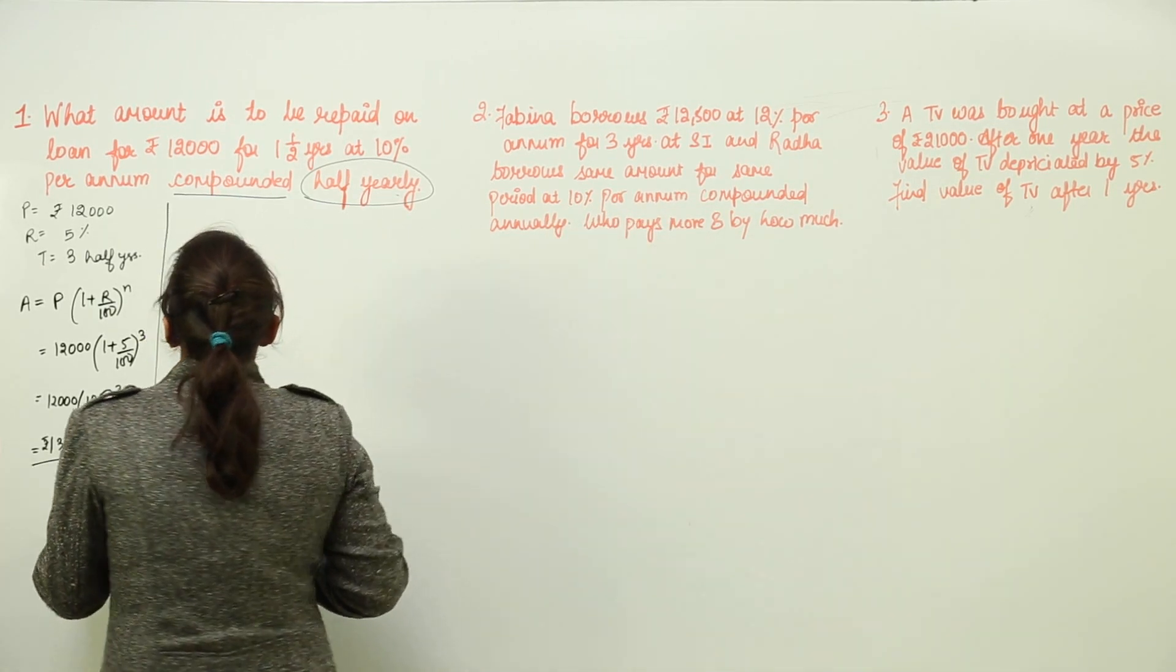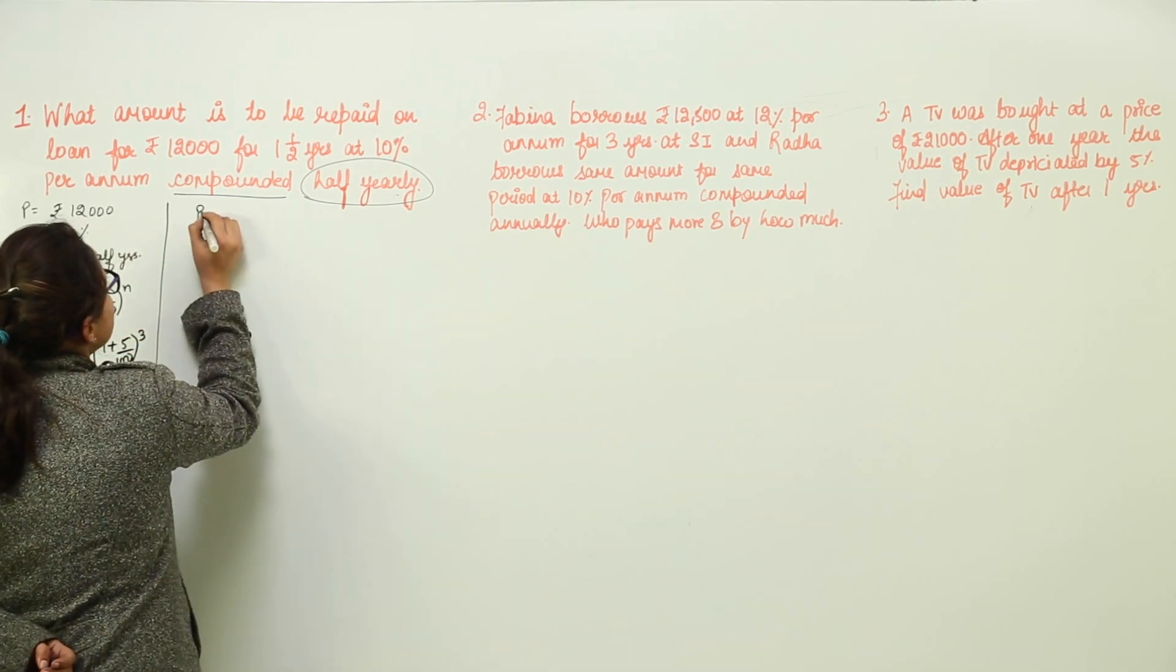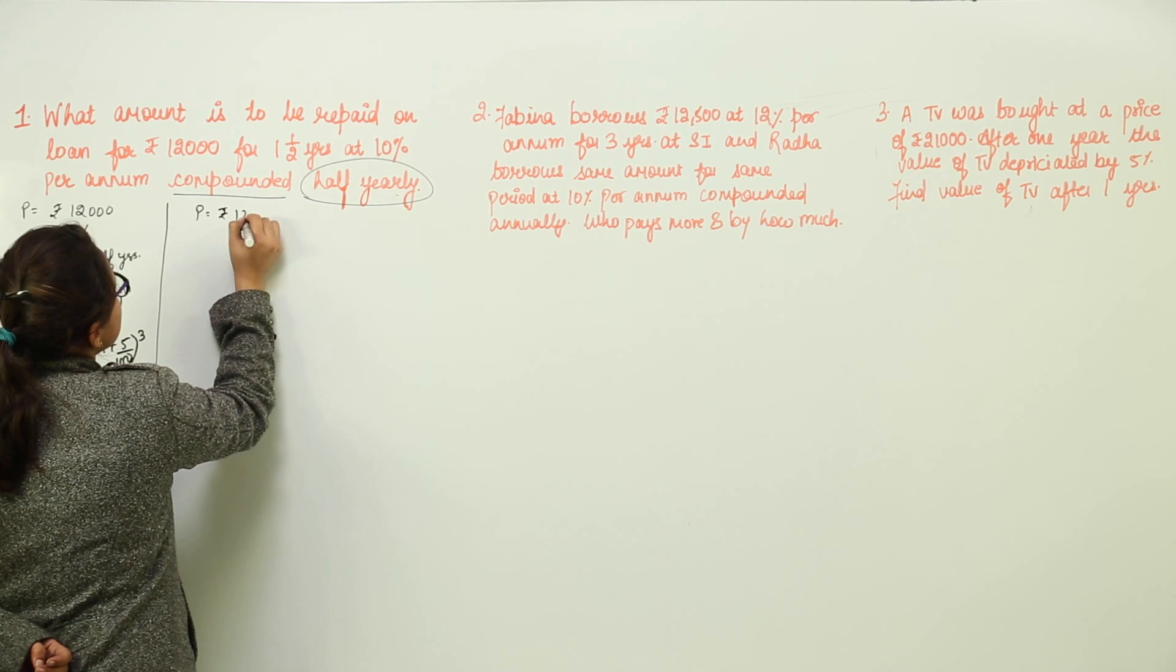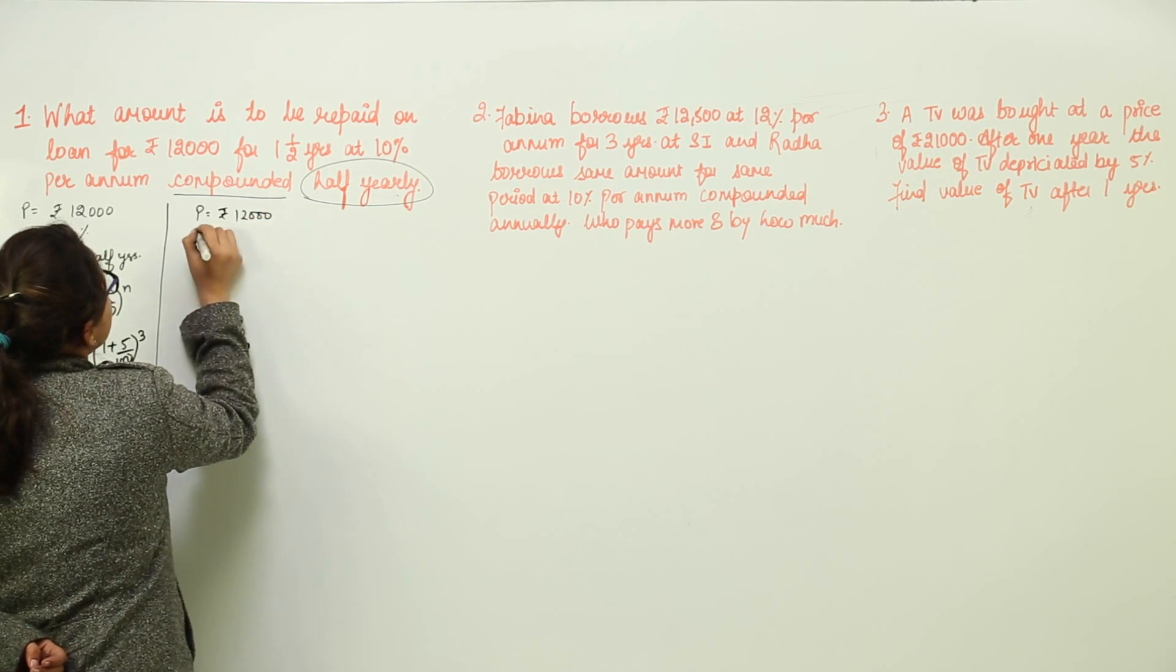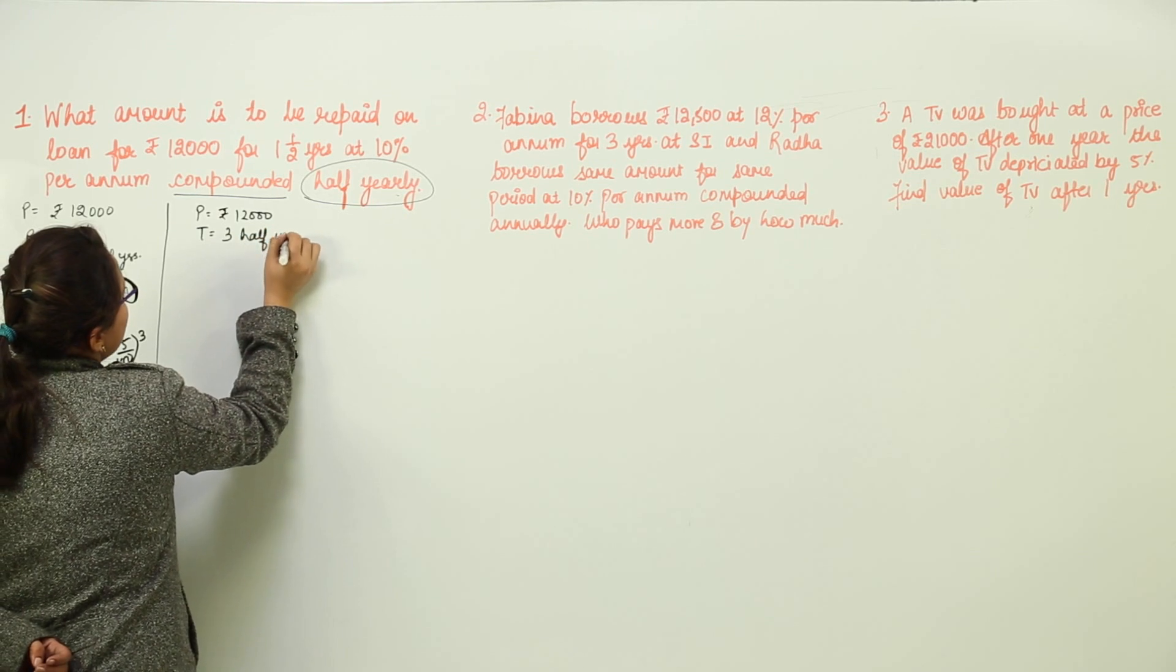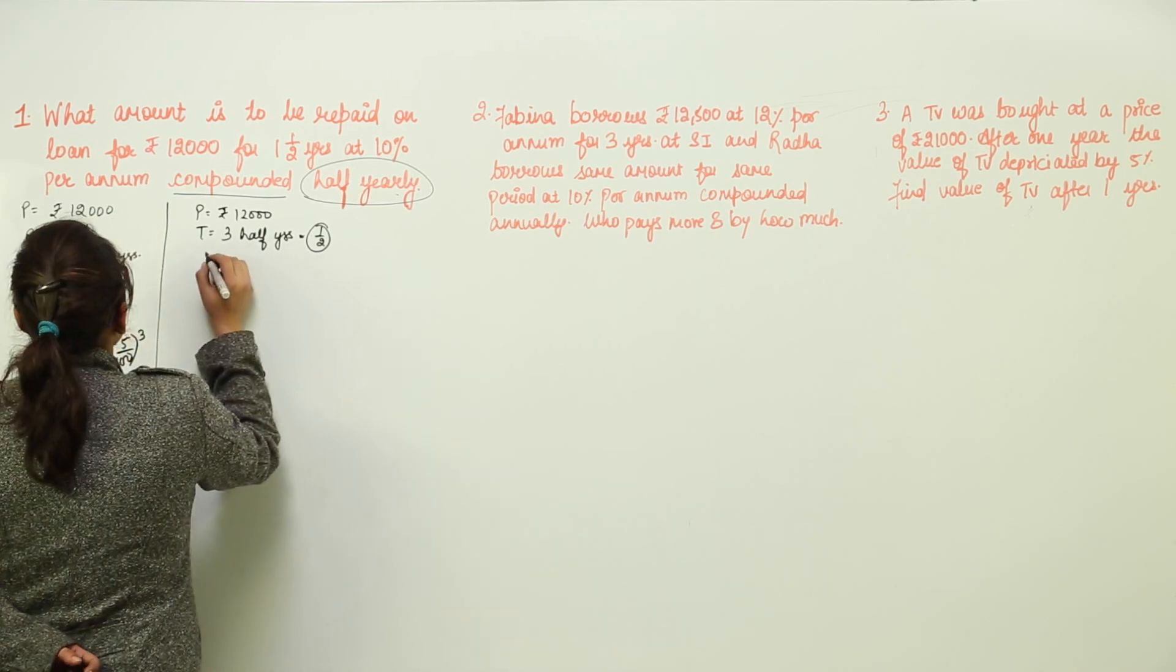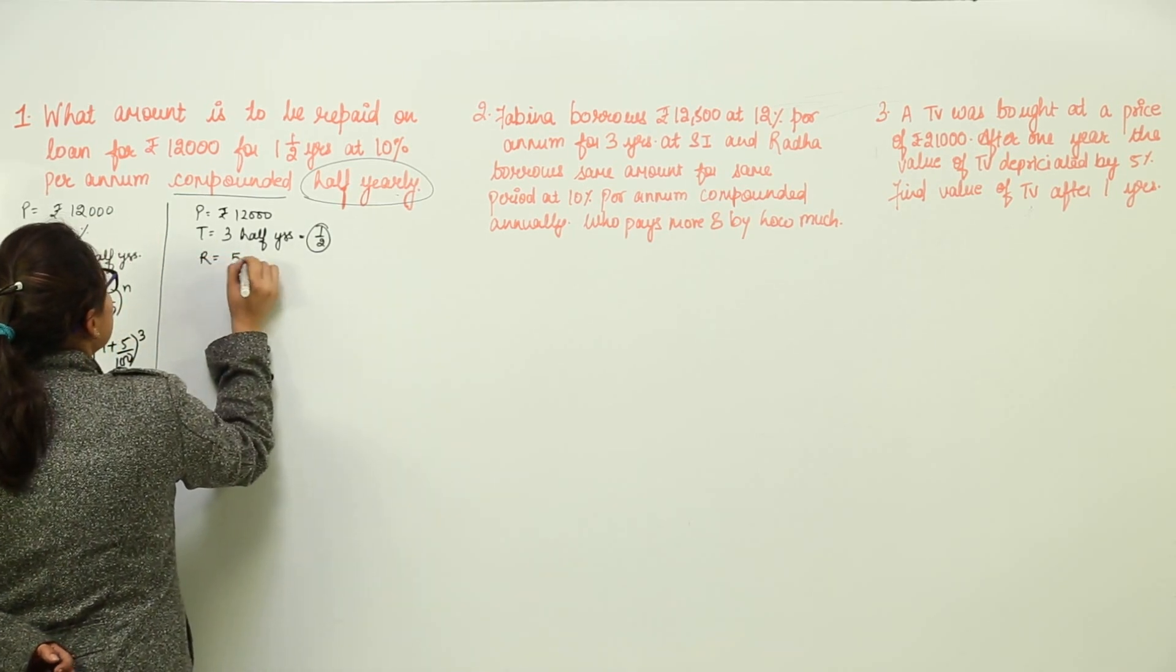Now, let us check our answer the other way that we used to solve. For first principle would remain the same, that is 12,000, the time period is 3 half years. I can write the time period as 1 by 2 for each case. Now, the rate of interest would remain 5%.